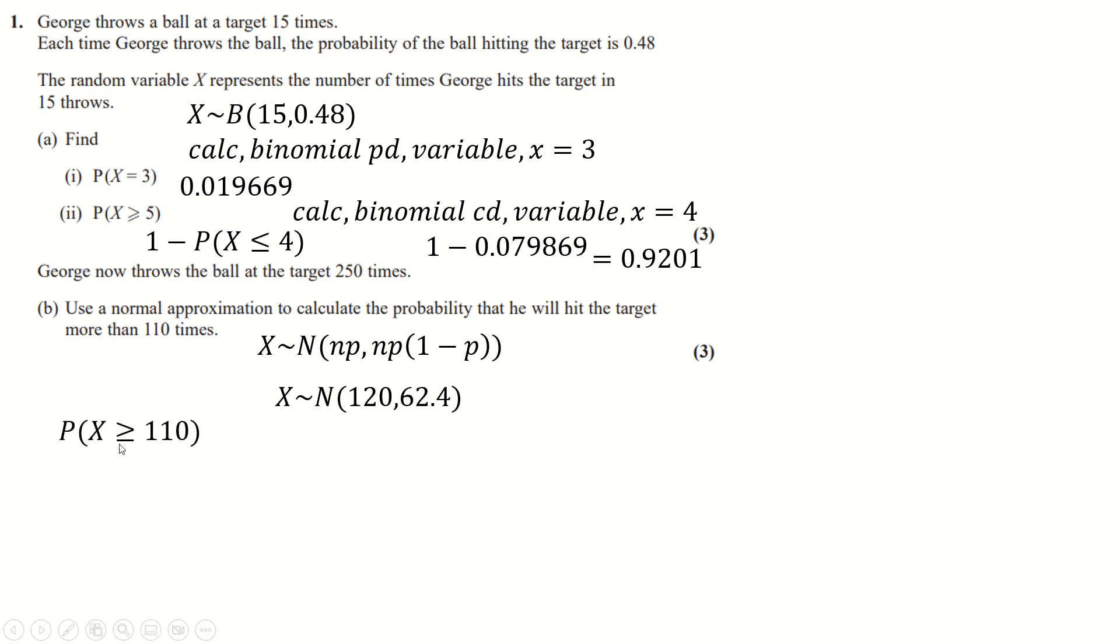And now what we have to do is say we want x to be greater than 110. Now, that's on the binomial distribution. So we want to do a normal, which means we'll actually want to be greater than 110.5. I'm just doing a continuity correction.